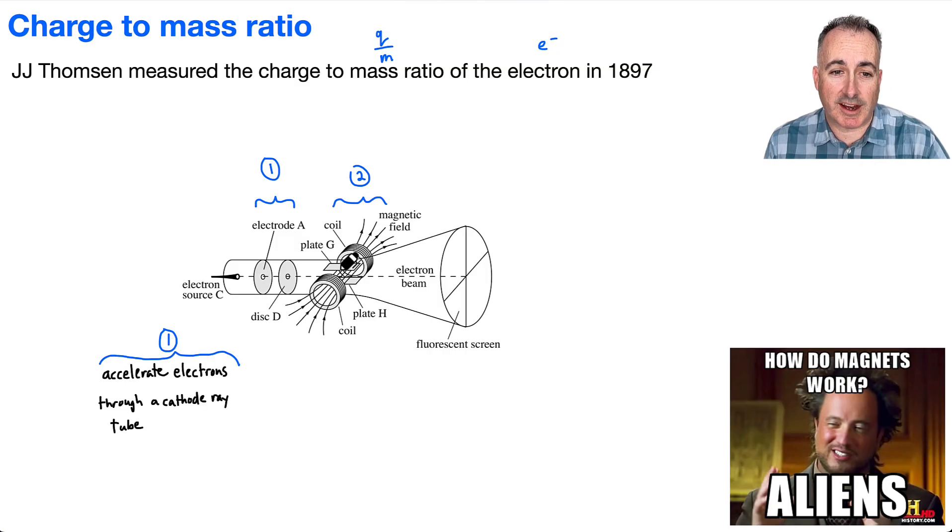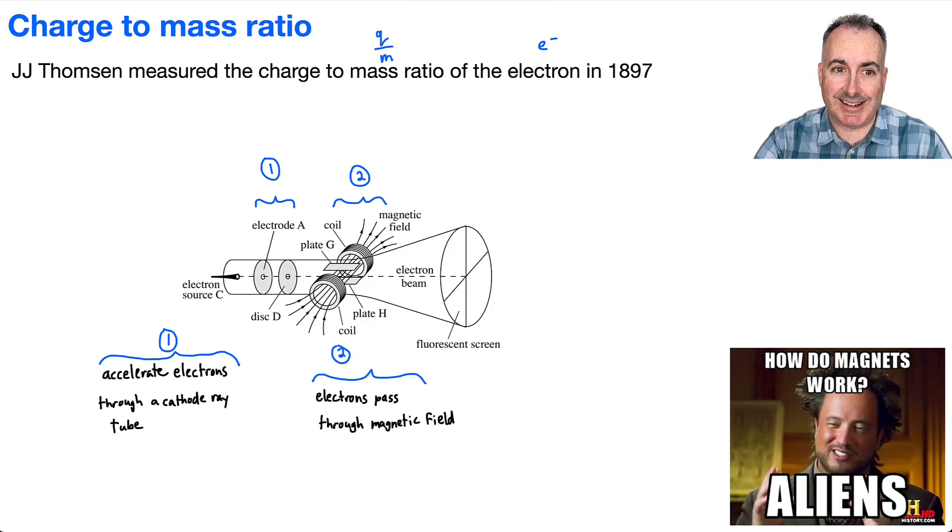In this first section, we're going to be accelerating electrons through a cathode ray tube. And then in number 2, what you're doing is taking those accelerated electrons and passing them through a magnetic field, so they're going to be deflecting.